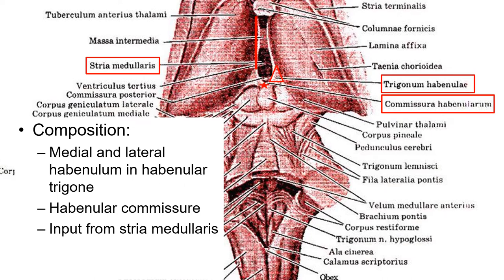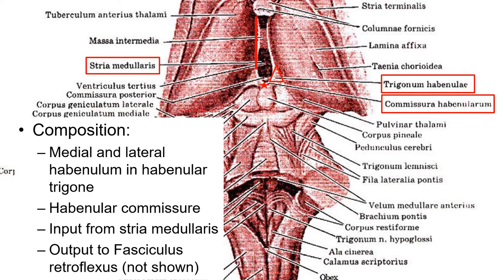There are input and output structures leading into and out of the habenulum respectively. The input is mostly carried by the stria medullaris, which runs anterior to and medial to the thalamus. The output tract is not shown here and is called the fasciculus retroflexus. We'll go over each of those in more detail.